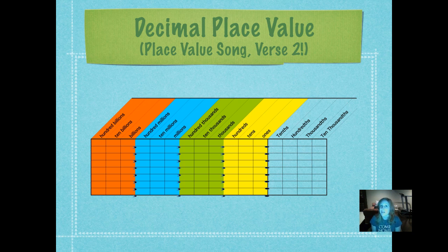Ones, tens, hundreds, thousands, ten thousands, hundred thousands, millions, ten millions, hundred millions — that is place value. Verse 2: decimal, tenths, hundredths, thousandths, ten thousandths, hundred thousandths, millionths, ten millionths, hundred millionths — that is place value.